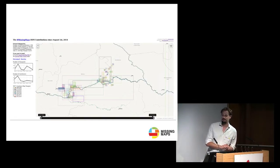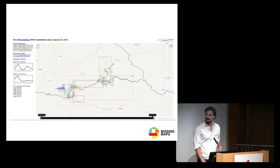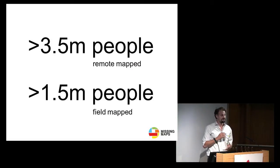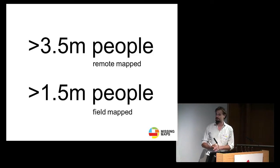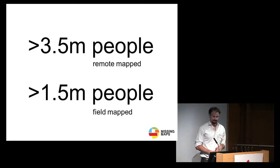So far in the Missing Maps project, over 2,000 people have contributed edits to the map — over 4 million edits thus far. In more human terms, we've mapped the homes of over 3.5 million people in some of the worst places on Earth. Of those 3.5 million people, over 1.5 million we've also collected field map data for.